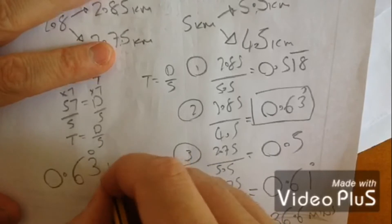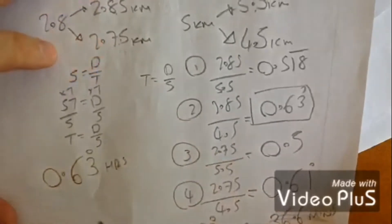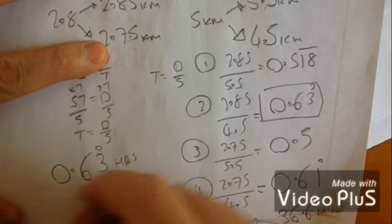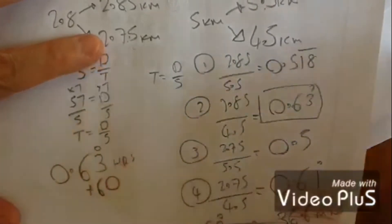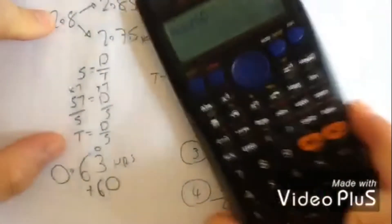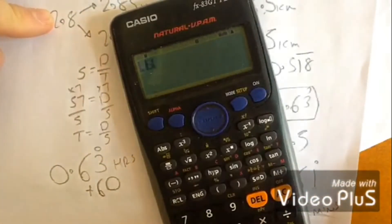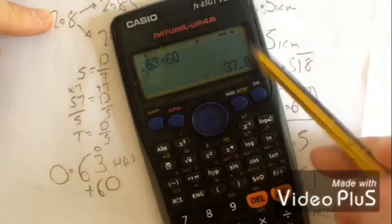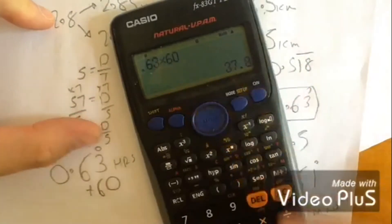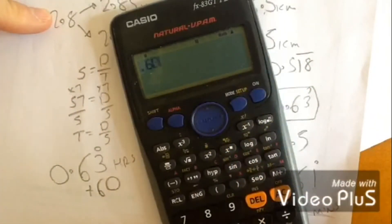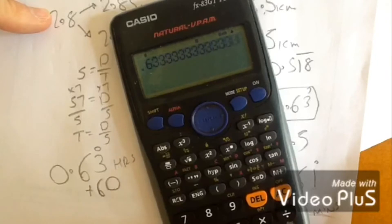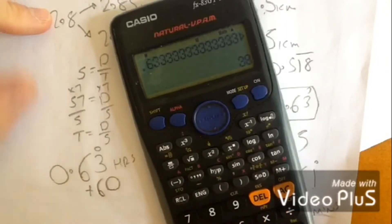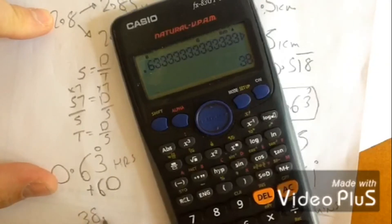The answer is in hours but the question asks for minutes, so multiply by 60. Don't type 0.63 times 60 — it's 0.63 recurring, so enter the full recurring decimal. The answer is approximately 38 minutes.